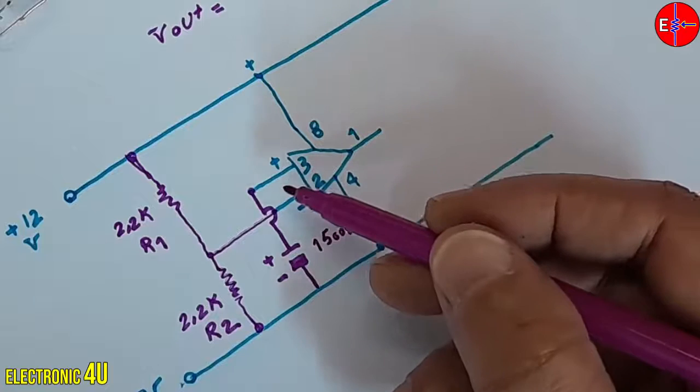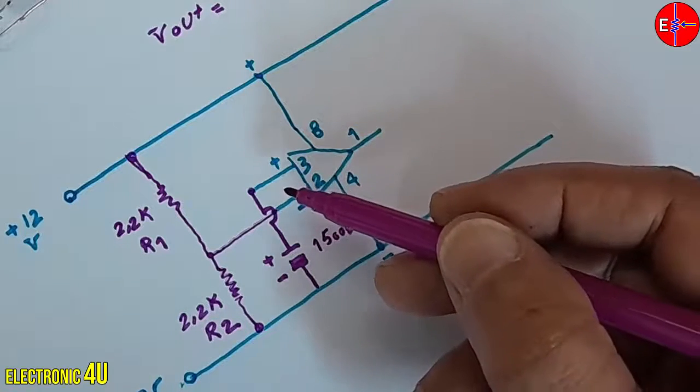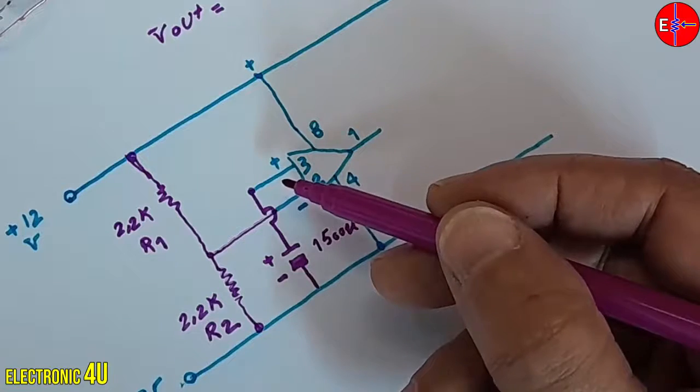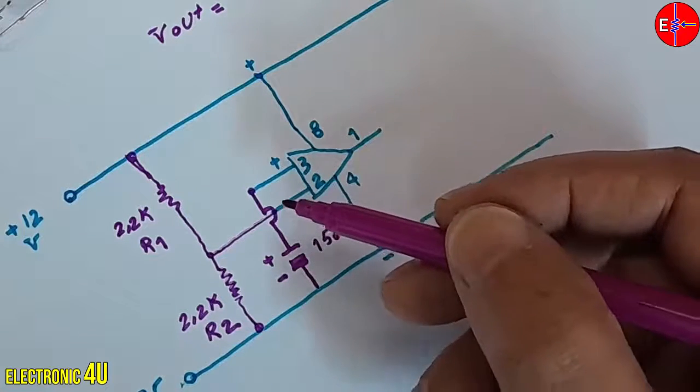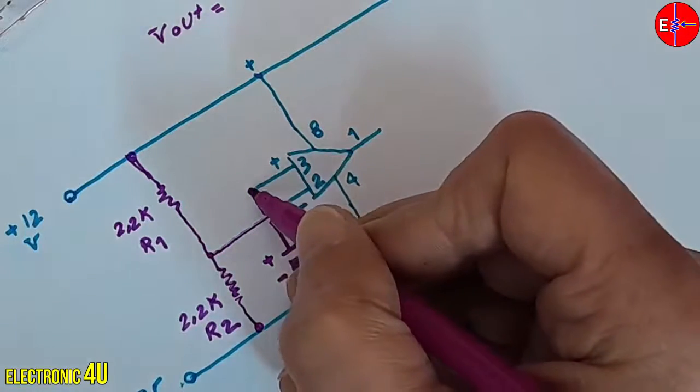let's say 1 kOhm, and then add a variable resistor or potentiometer in continuation of the same resistor. I am using a 100 kOhm potentiometer, but you can adjust the values as needed.